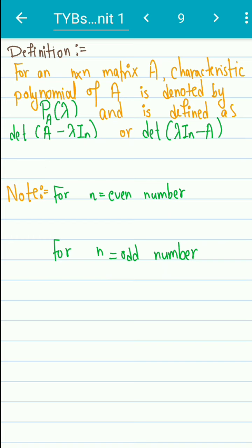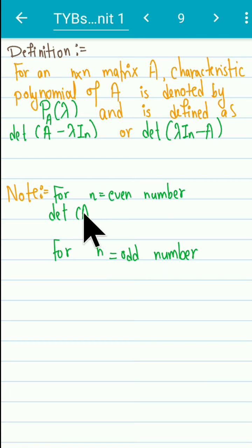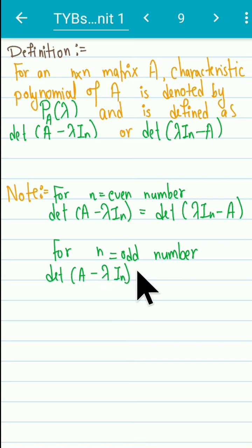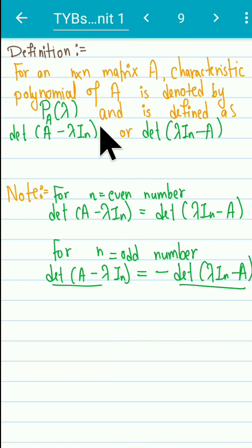You might think: why is there no unique definition? The answer is simple — both actually represent the same polynomial, but a change in sign may occur. If n is even, then determinant of (A minus lambda I_n) equals determinant of (lambda I_n minus A). When n is odd, these two are distinct because of the sign change. However, since we are interested in the roots of this polynomial, either definition gives us the same roots.